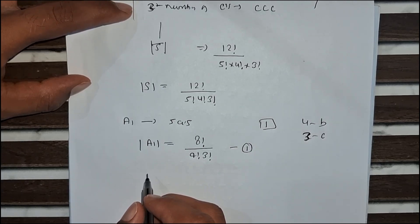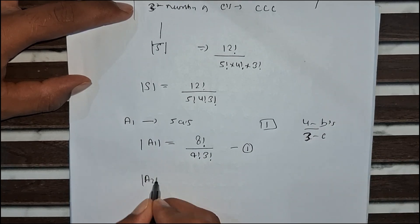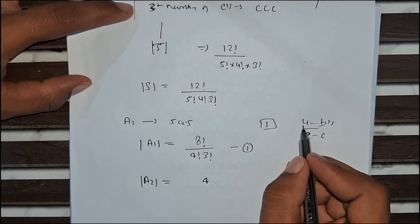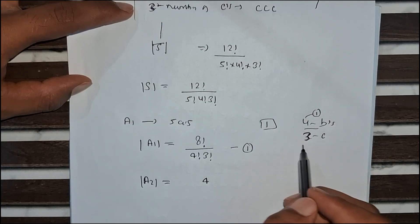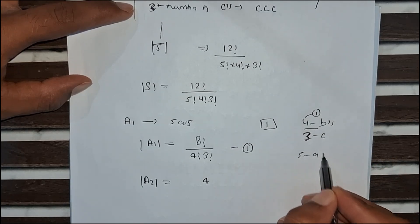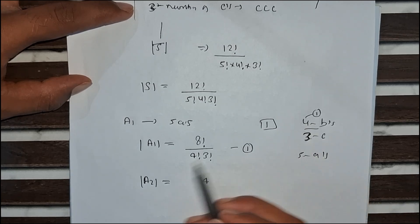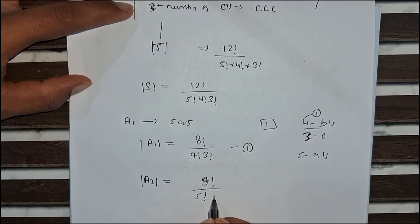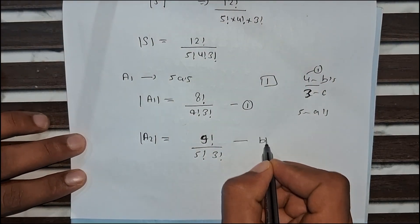A2 is the set of arrangements where all 4 B's are together. We consider the 4 B's as 1 block. The remaining letters are 5 A's and 3 C's, giving 5 plus 3 equals 8, plus 1 block equals 9. So A2 equals 9 factorial divided by 5 factorial times 3 factorial.